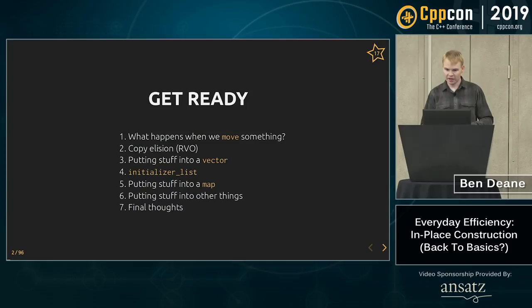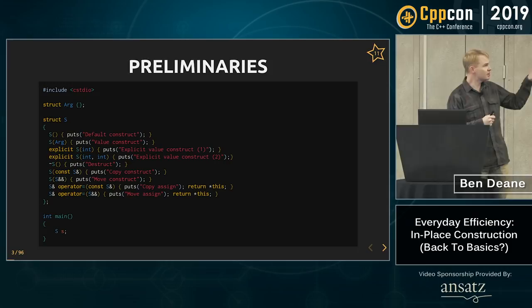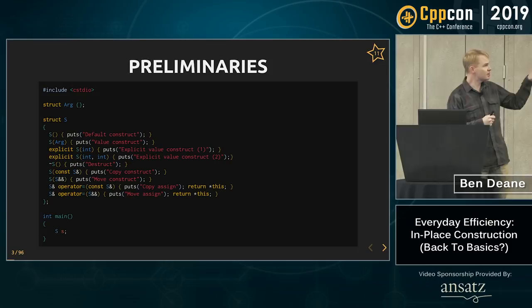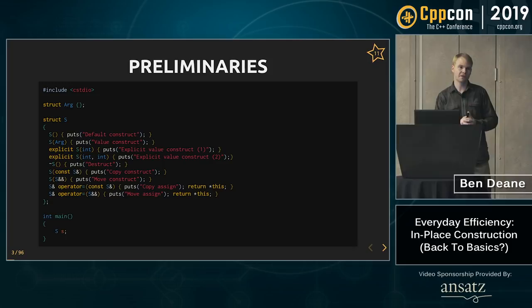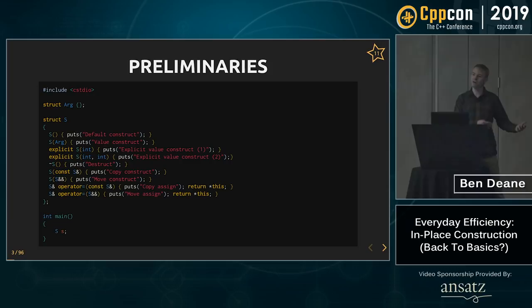Let's get started. I'll also be using this class — can everyone read that? My syntax highlighting is a constant battle. This class is something you might have seen if you've watched Jason Turner's C++ Weekly. It's a noisy class that tells us whenever any of the special member functions get called. It's outfitted with pretty much all the special member functions we could want, including multiple constructors, some of which are explicit, some multi-argument.